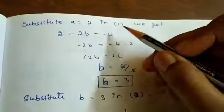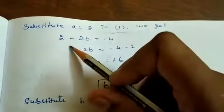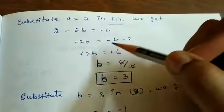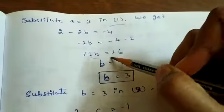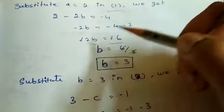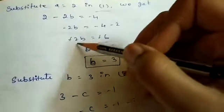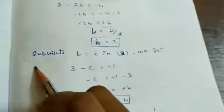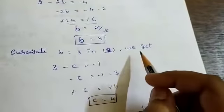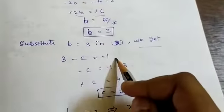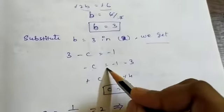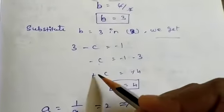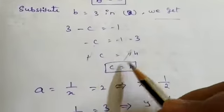When we get A equal to 2, put it in equation 1. We get 2 minus 2B equal to minus 4, so minus 2B equal to minus 4 minus 2, which is minus 6. The negatives cancel, giving B equal to 6 divided by 2, so B equal to 3. Substitute B equal to 3 in equation number 2: 3 minus C equal to minus 1, so minus C equal to minus 4, and C equal to 4.